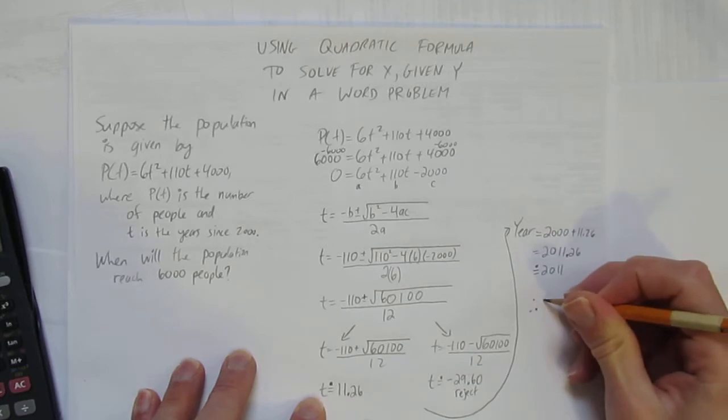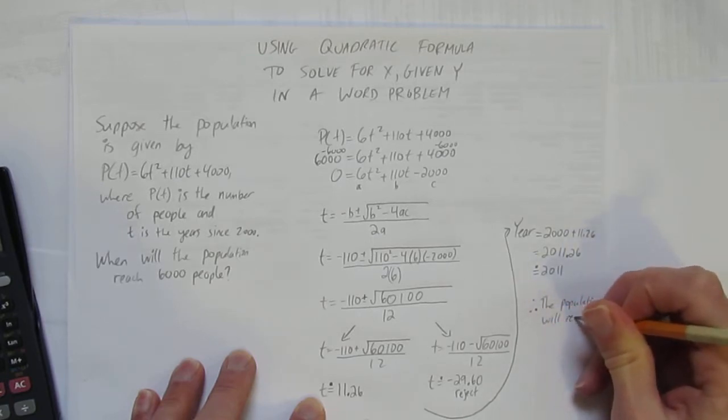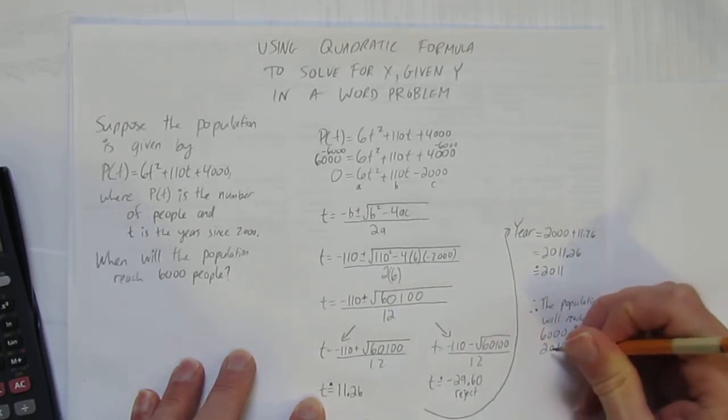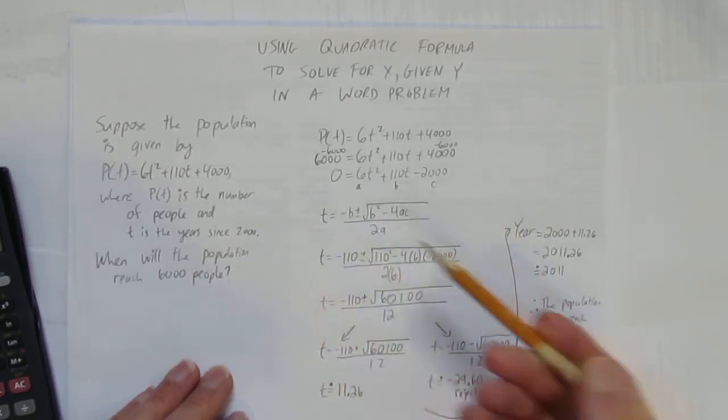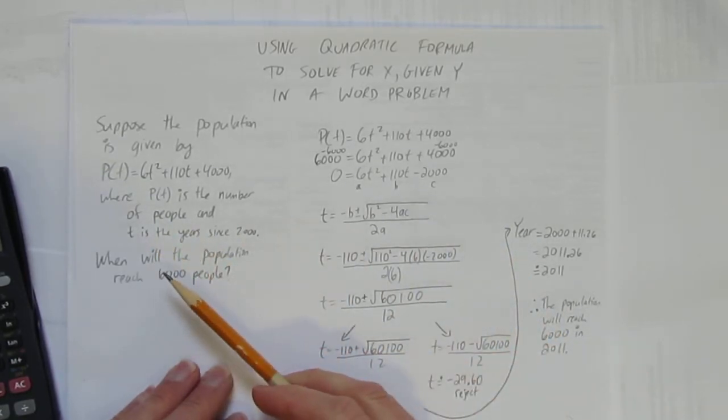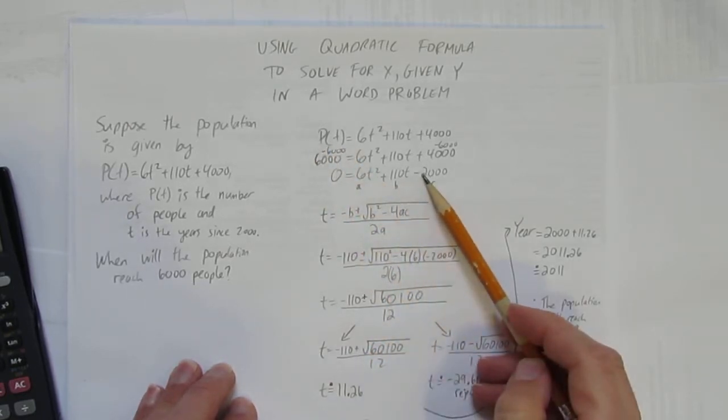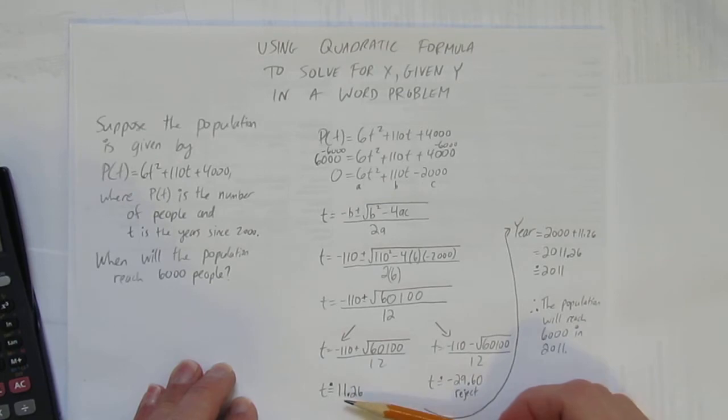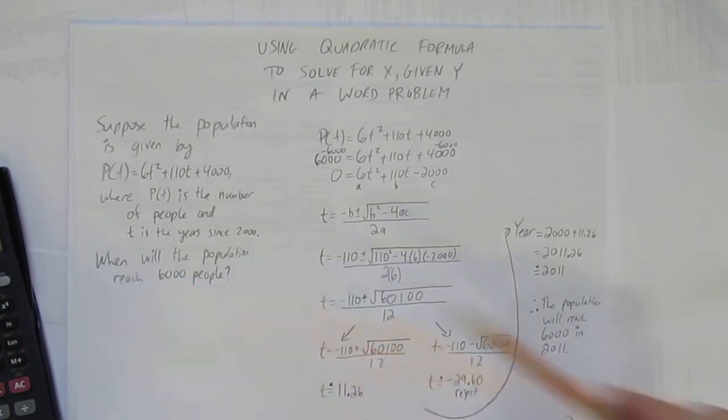Finally, I need a therefore statement: the population will reach 6,000 in 2011. Now I'm done. I solved a word problem for the t value given the y value, which was 6,000. How did we do it? We subbed that 6,000 into the equation for the y, the P(t), then we got everything to one side so we could use quadratic formula. The positive solution—we rejected the negative one—was the solution of what year the population reaches 6,000.